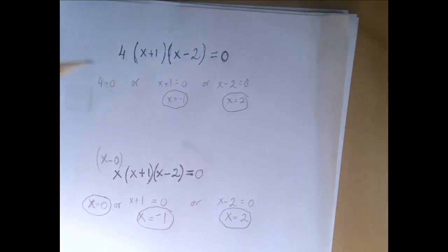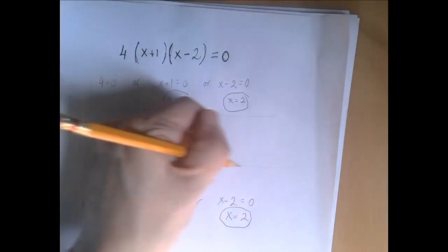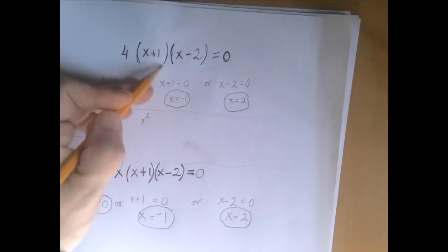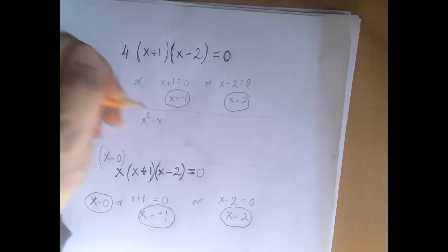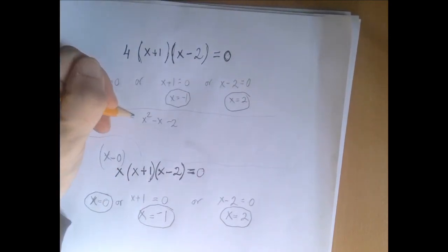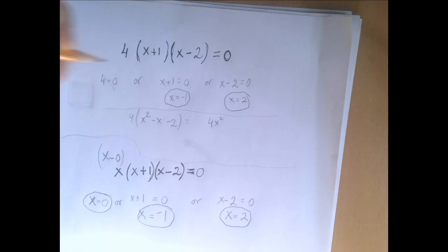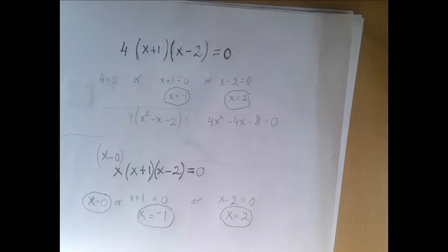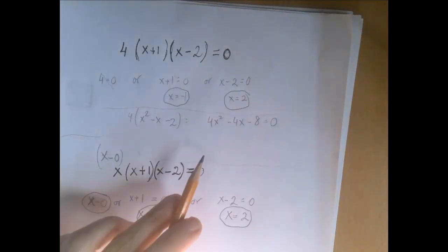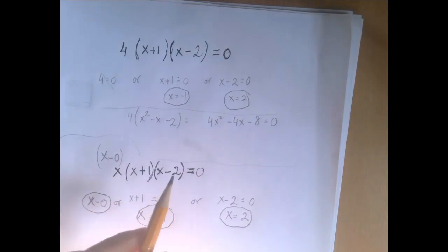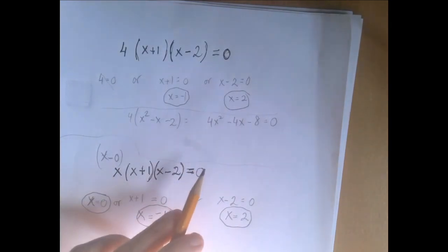x plus 1 times x minus 2, when we foil it out, we get x squared minus 2x plus x, which is minus x, and minus 2. When we multiply that by 4, we get 4x squared minus 4x minus 8. That is a quadratic equation. Quadratic equations cannot have more than two solutions.